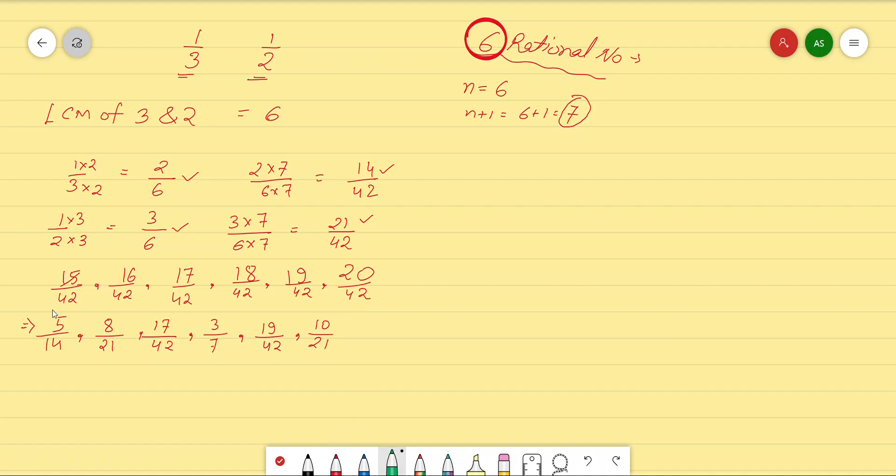So these are the 6 rational numbers which were required. This is how we can find out any number of rational numbers between a pair of rational numbers. For you all, there is an exercise in the NCERT first chapter where we have to calculate the rational numbers between a pair. Do solve those questions. We will meet with the next topic in the next class. Till then, have a good time.